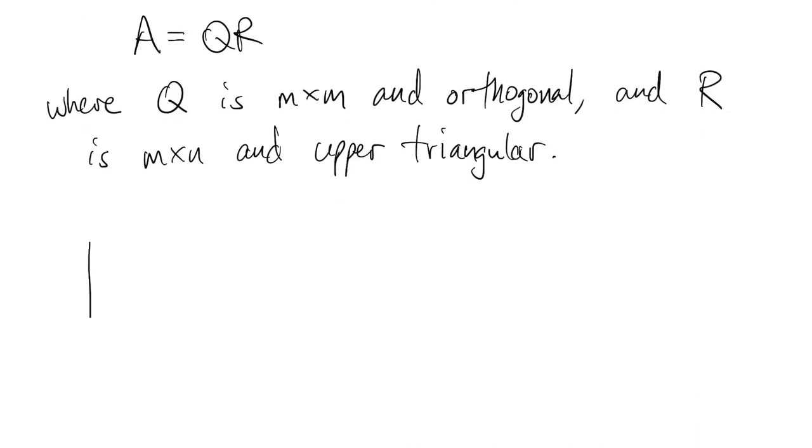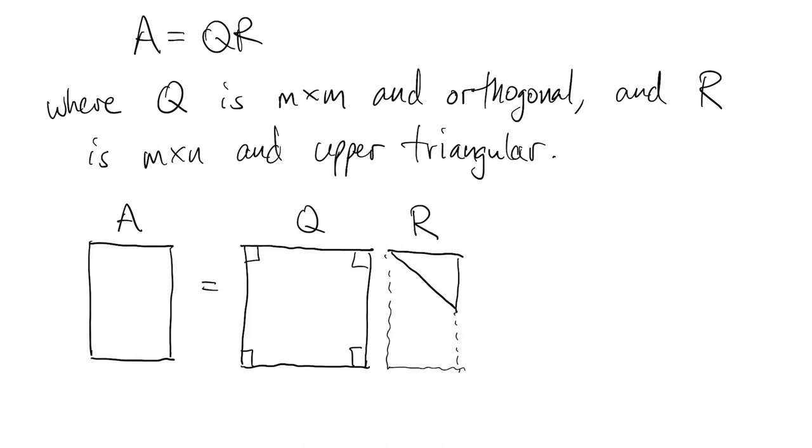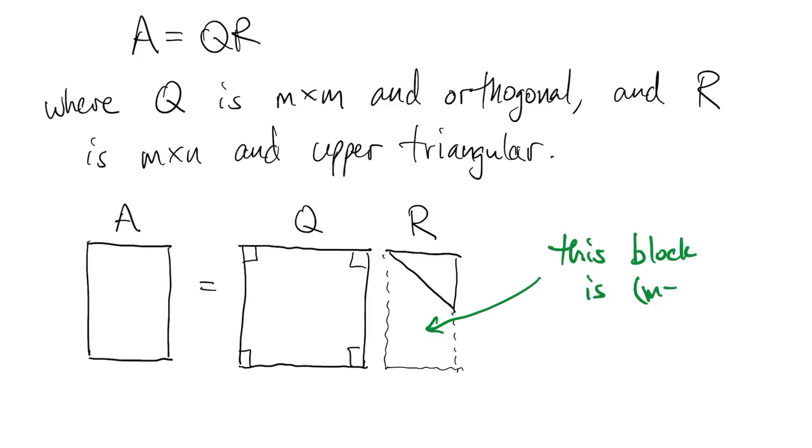So using our little matrix pictures, let's say A is a tall, skinny matrix. Then it's the product of a square, orthogonal matrix. That's what the right angle things are for. And an upper triangular matrix, which is the same shape as A. And you notice that if R is upper triangular, all this stuff down here is zero.